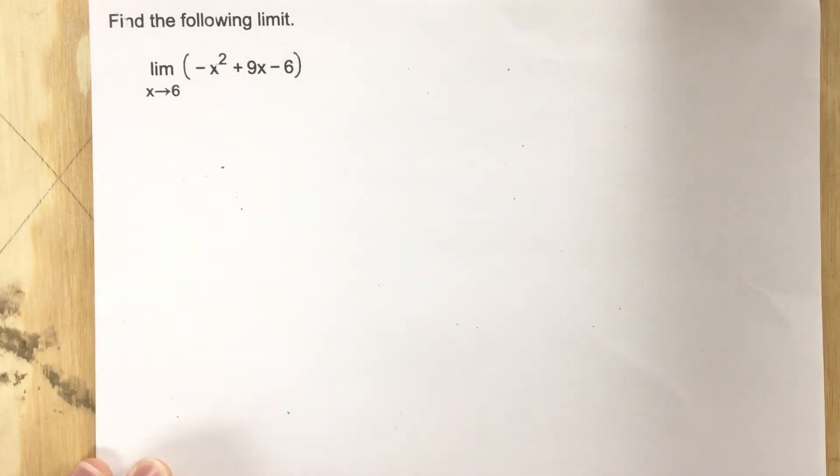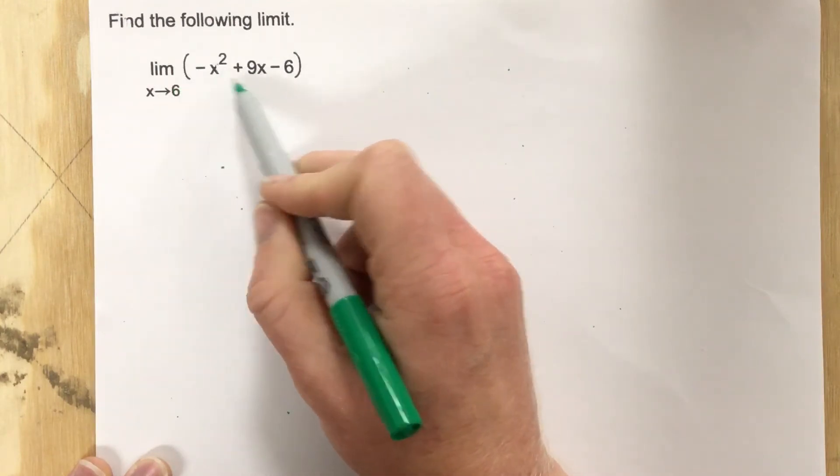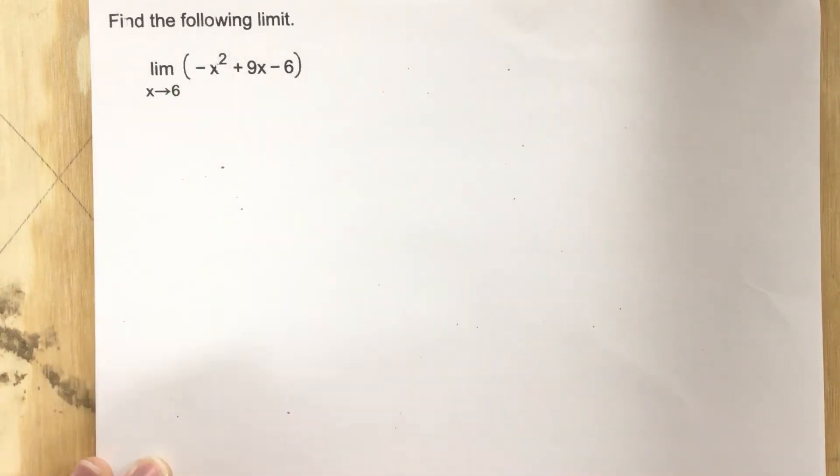Now you always want to check to see, can I plug in six right away? Is this quadratic defined at six? Because if it's defined at six, then that's the limit.